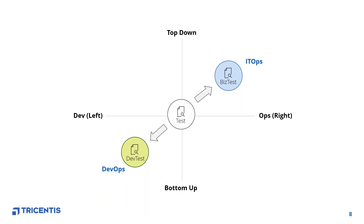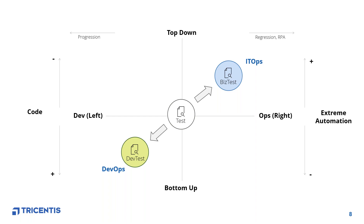On the DevTest side, this is more of a bottom-up movement — somebody taking a sprint and testing somewhat myopically but focusing on the changing code base. On the IT ops side, testing is more top-down. The left side does more progression testing focused on the changing code base and user stories. On the right we're seeing more automation — running regression test suites, and concepts like RPA, AI, and machine learning to understand the impact of change.